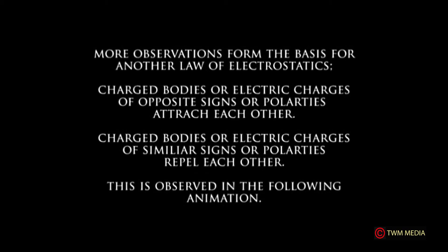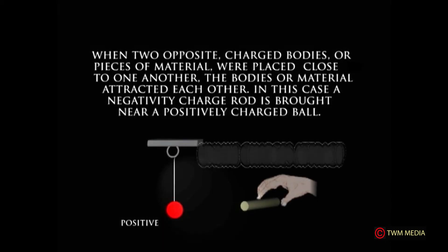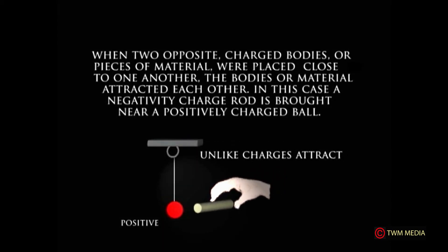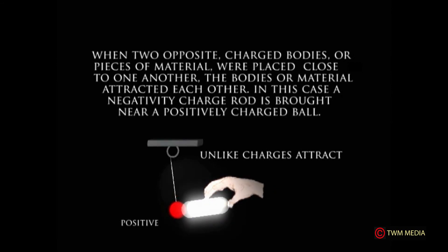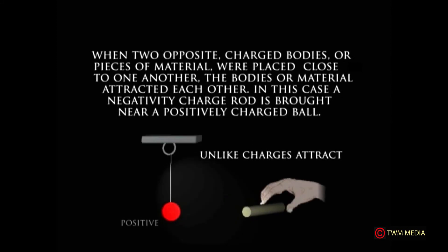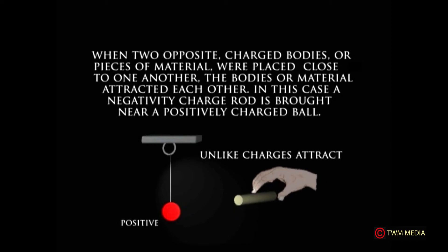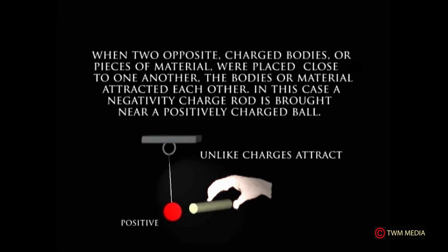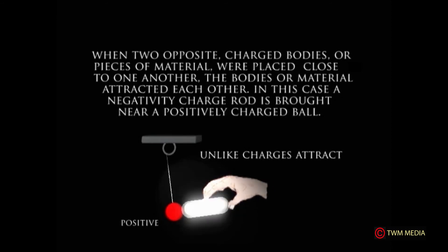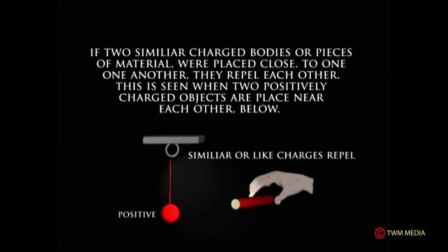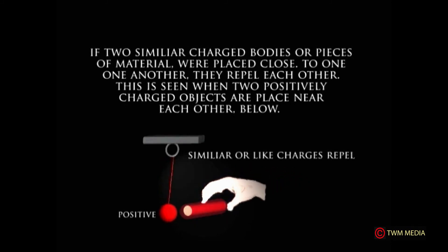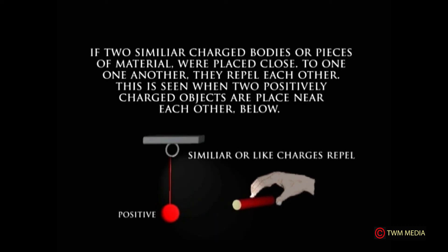This is observed in the following animation. When two oppositely charged bodies or pieces of material are placed close to one another, they attract each other — for example, a negatively charged body brought near a positively charged ball. If two similarly charged bodies are placed close to one another, they repel each other, as seen when two positively charged objects are placed near each other.